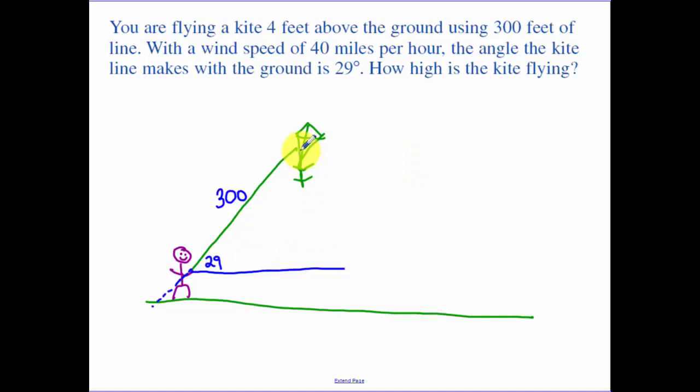I want to know how high the kite is flying. I want to know essentially that whole distance there. Let's make that be H, realizing that I'm 4 feet above the ground so I'm going to eventually have to add 4 to it. So I'm looking for this H which is from here up to our kite.